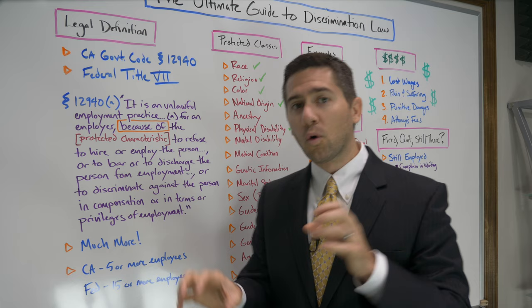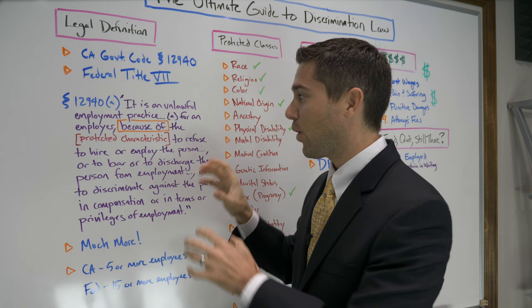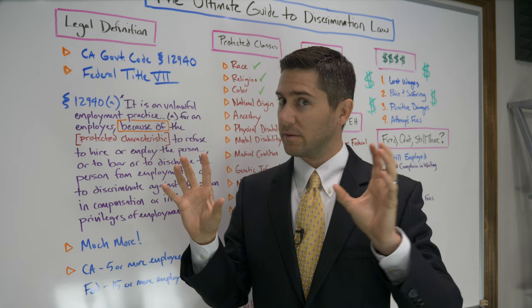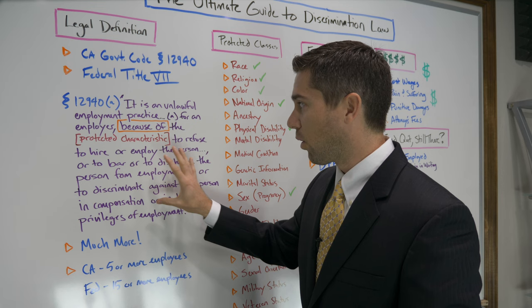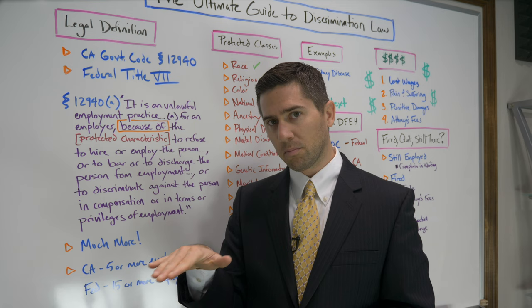Before we get to them, I need to point out a couple of things. Number one, I only read subsection A of this law — there's a whole lot more to that particular statute and to the entire body of discrimination law. Second, this California law only applies to companies that have five or more employees. Title VII only applies to companies that have 15 or more employees. So if you work for a small company below that threshold, you might have to pursue your case under a different law.